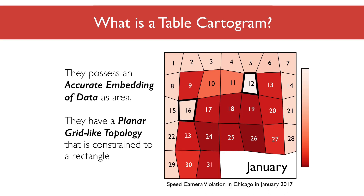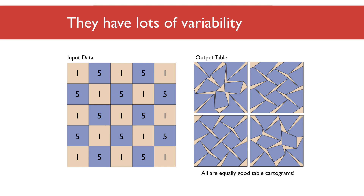Table cartograms are a recent form of data visualization that embed tabular data in a grid of quadrilaterals, like a heat map that has been areaed rather than colored. There are lots of different valid outputs for a single input table. Unfortunately, algorithms found in prior work prevent exploration of this design space.